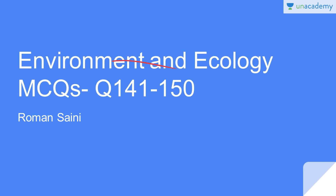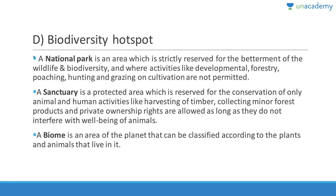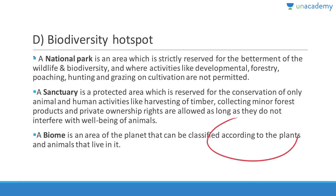An area of land that contains an exceptional number of endemic species and is threatened with destruction is known as a hotspot. A national park is strictly reserved for wildlife; all activities are not permitted. A biome is a large area classified by its plants and animals. A sanctuary is a protected area with limited private ownership allowed. Biosphere reserves can have national parks and sanctuaries inside them.